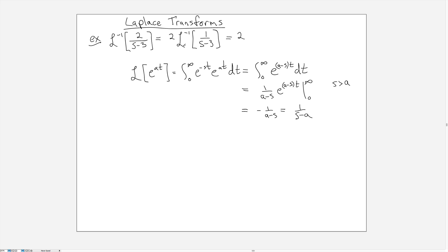So we can write down immediately that this is e to the 3t, and that 2 is still out in front, so we get 2e to the 3t is the inverse transform.